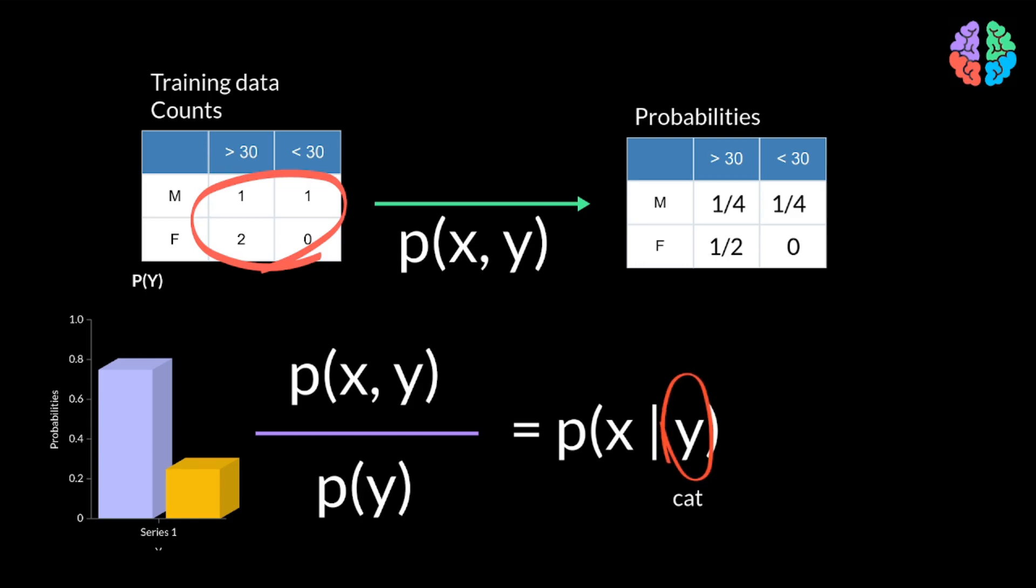With this solution, we can input a label cat and ask the model to output x, which will be an image of a cat, or we can input a label dog and get an image of a dog as the output.